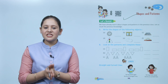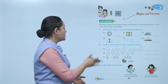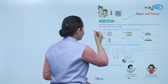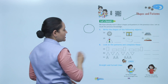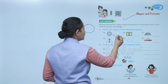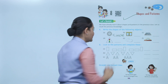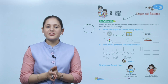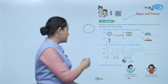Write the shape of the following object. Clock — what is the shape? Circle. So we'll write C-I-R-C-L-E. Next, look at the pattern and complete these.